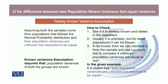Thirdly, testing whether the variances are known or not. The statement clearly says that the population variances are unknown but assumed to be equal. If they were not known, we could estimate them from the sample and use Levene's test to compare whether the unknown population variances are equal or not. But since equality is already stated in the problem, we proceed accordingly.